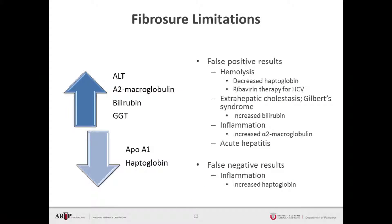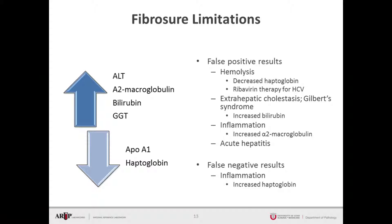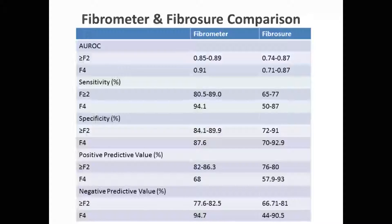Because of some analytes present in FibroSure, there are limitations to FibroSure testing — in particular bilirubin and haptoglobin, which are not present in FibroMeter. The problem with bilirubin is that elevated levels can be observed in other conditions such as extrahepatic cholestasis or Gilbert syndrome. If there is inflammation, increased haptoglobin can give a false negative result. Since haptoglobin and bilirubin are not part of FibroMeter, they do not lead to these issues — which is one advantage of FibroMeter over FibroSure.